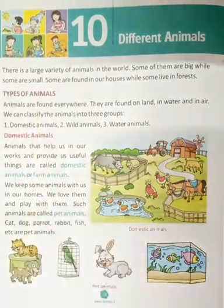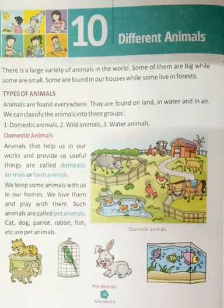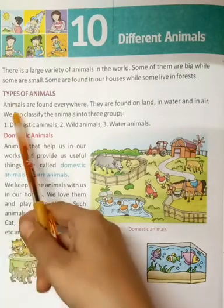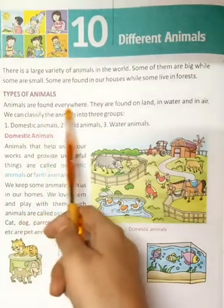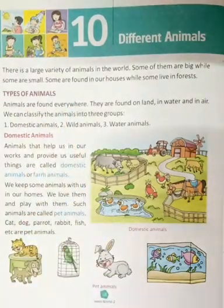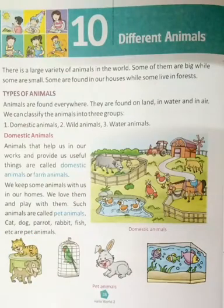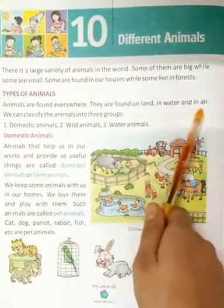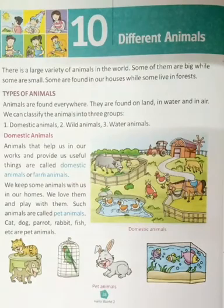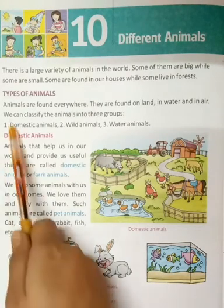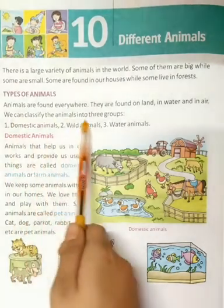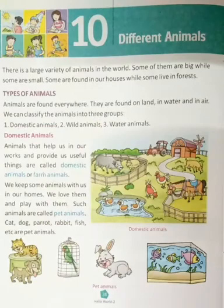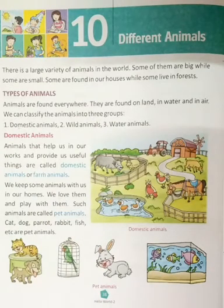Now we will talk about different types of animals. Animals are found everywhere — on land, in water, and in air. We can classify animals into three groups.